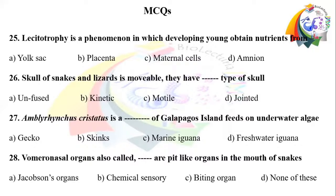Question number 26: Skull of snakes and lizards is movable; they have a dash type of skull. Option A: unfused. Option B: kinetic. Option C: motile. Option D: jointed.